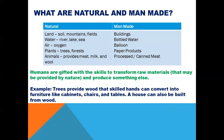What are natural and man-made resources? Natural resources include: land — in the form of soil, mountains, and fields; water — rivers, lakes, and seas; air — in the form of oxygen; and forest — in the form of trees. For animals, they can provide meat, milk, and wool.